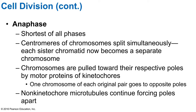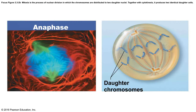Anaphase is the third and shortest phase of mitosis. It starts abruptly as the centromeres split simultaneously, and each chromatid becomes its own chromosome. Motor proteins in the kinetochores gradually pull each chromosome toward the poles. At the same time, polar microtubules slide past one another, lengthening and pushing the two poles apart. Anaphase is easy to recognize because the moving chromosomes take on a V-shaped appearance. Kinetochore microtubules pull the sister chromatids away from the metaphase plate toward opposite poles.